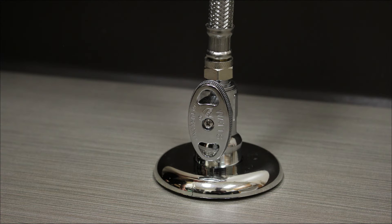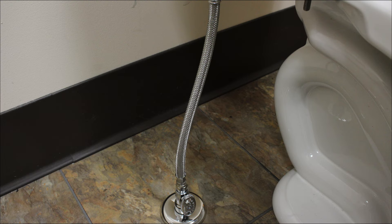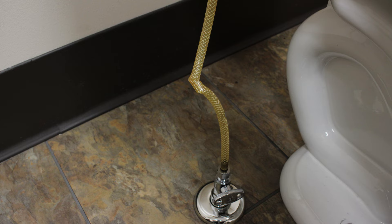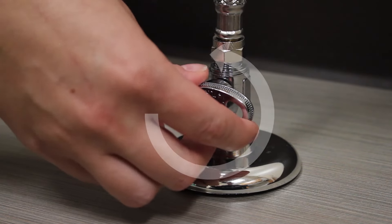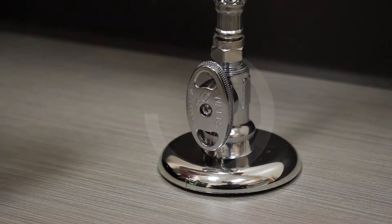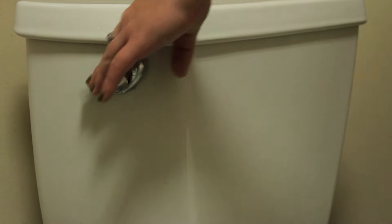First ensure that the water supply valve is turned completely open and that the supply line is free of kinks. If the supply line was kinked or if it was necessary to turn the water supply open, flush the toilet to observe the water flow.